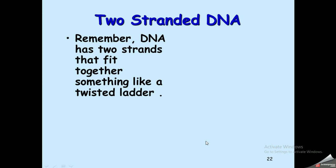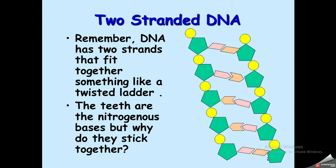When we talk about two strands of DNA, the double strand consists of two polymers of nucleotides. The connection between the two strands is through their nitrogenous bases. In the double helix, the phosphate and sugar are on the outside, and the nitrogenous bases are on the inside.